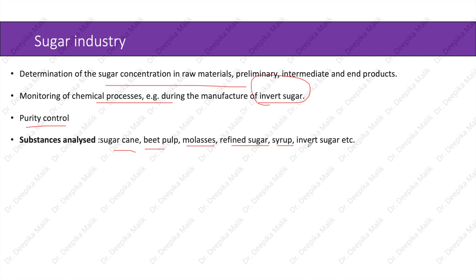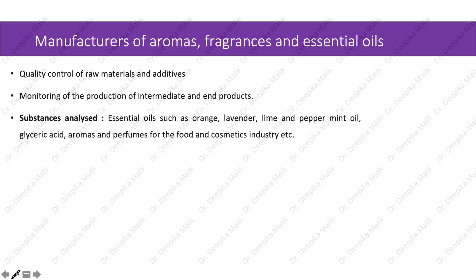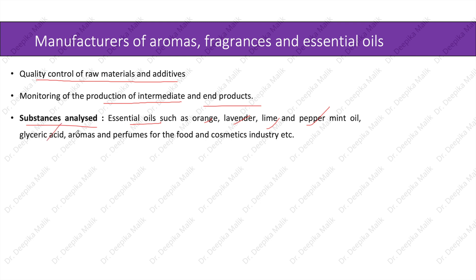In the manufacture of aromas, fragrances, and essential oils, polarimetry is used in quality control of raw materials and additives, and in monitoring production of intermediate and end products. Substances analyzed include essential oils such as orange, lavender, lime, and peppermint oil, glyceric acid, liquid aromas, and perfumes for the food and cosmetic industry.